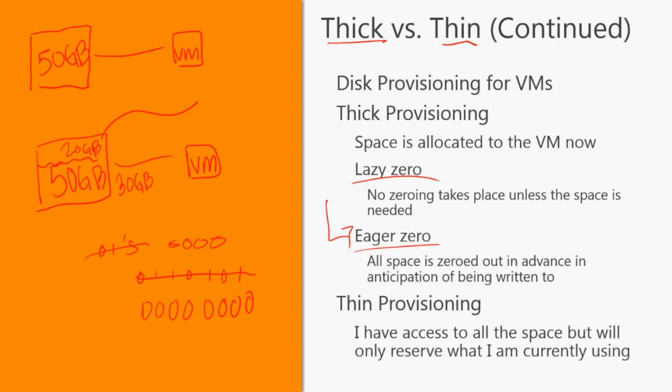In the old days, we used to have to do thick eager zeroed for fault tolerance — this is no longer the case. But it does provide a bit of write performance for only the initial write sequence. We get a little speed boost because we no longer have to zero things out at write time. I've seen lots of white papers going all the way back to 5.0 and the difference seems negligible. But if you want to squeeze every bit of performance out, thick eager zeroed is the way to do that for initial writes only. After that, it's the same performance no matter what.